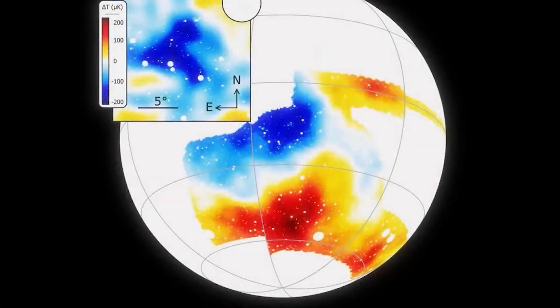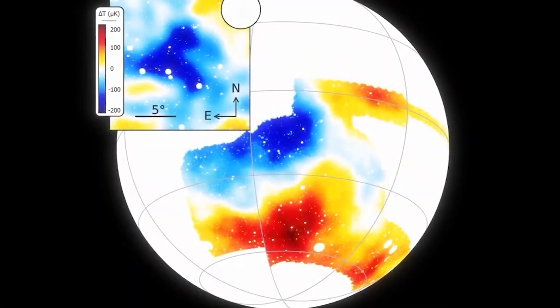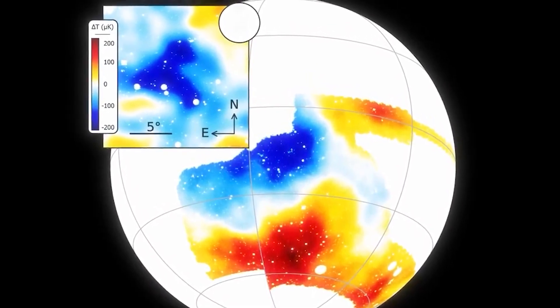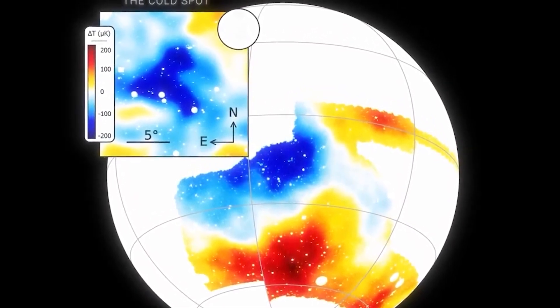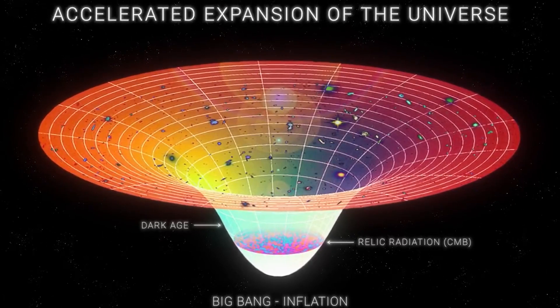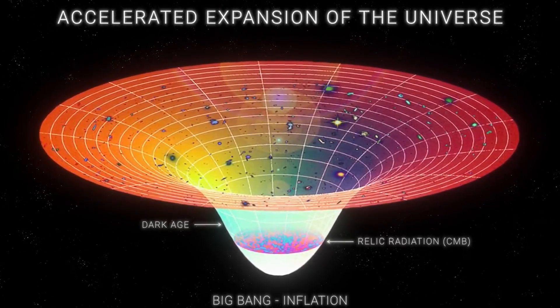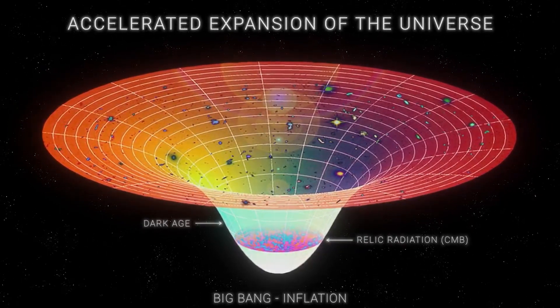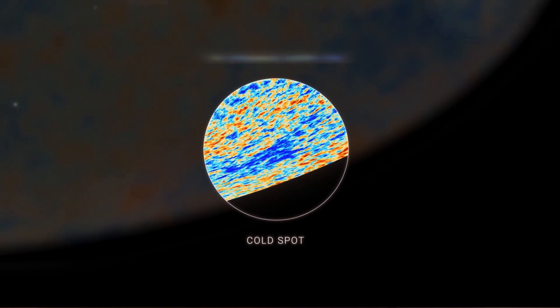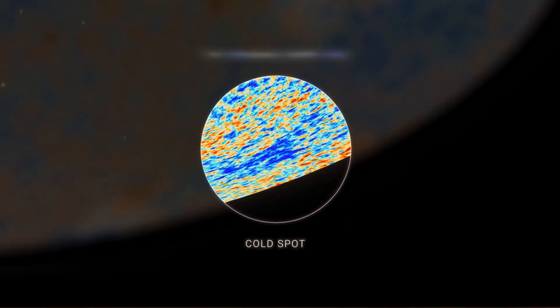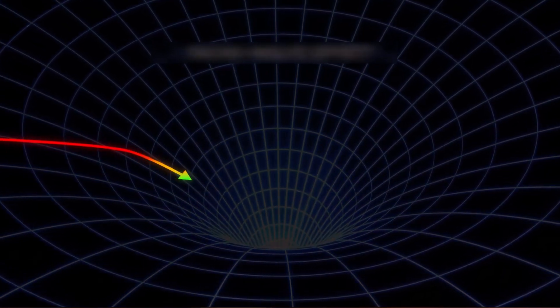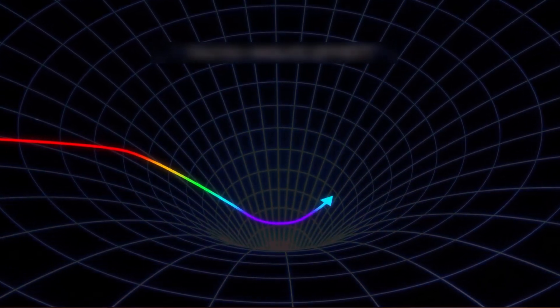Despite its immense size, the Eridanus Supervoid is strikingly barren compared to the galaxy-rich cosmos surrounding it. But what makes this supervoid even more intriguing is its connection to a cosmic puzzle known as the cold spot of relic radiation. This is an unusually cold region in the cosmic microwave background, the afterglow of the Big Bang itself. Some scientists speculate that the Eridanus Supervoid could be the culprit behind this cold spot, a phenomenon where photons lose energy as they pass through the void, resulting in a patch of relic radiation.